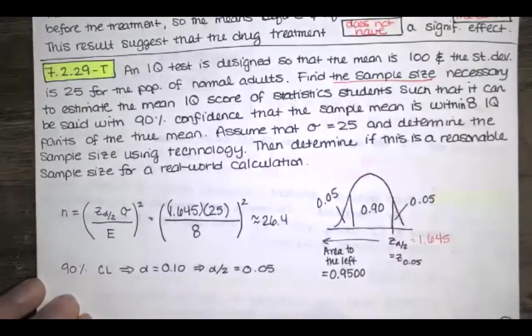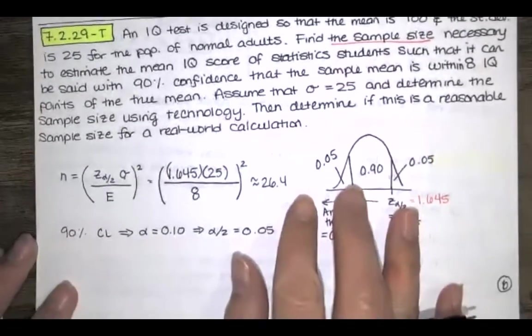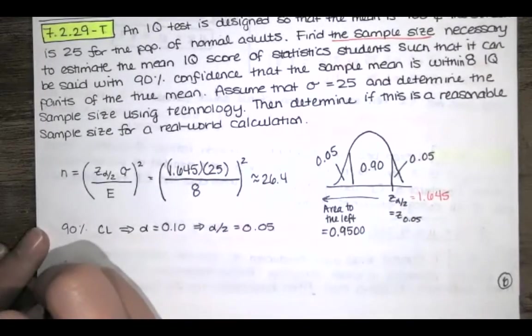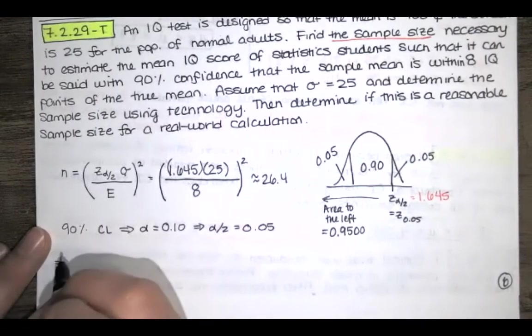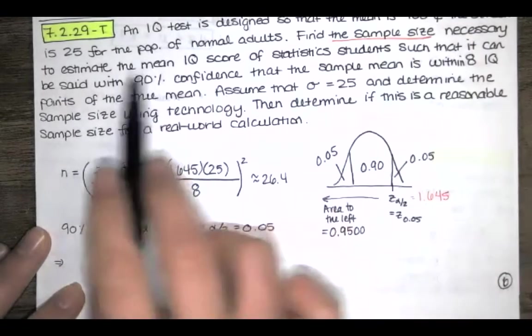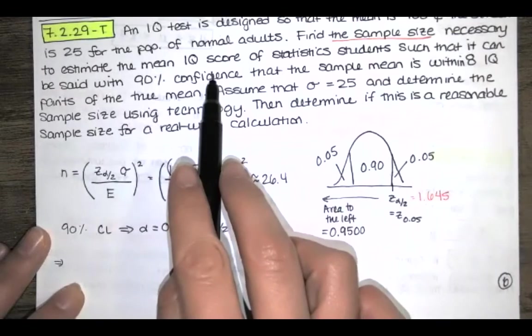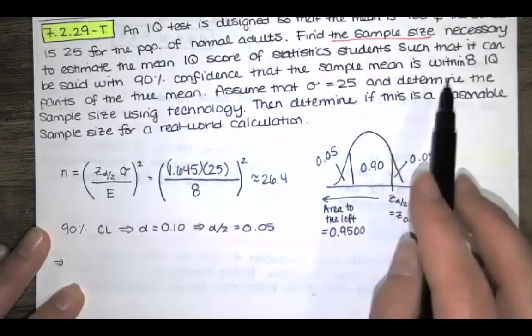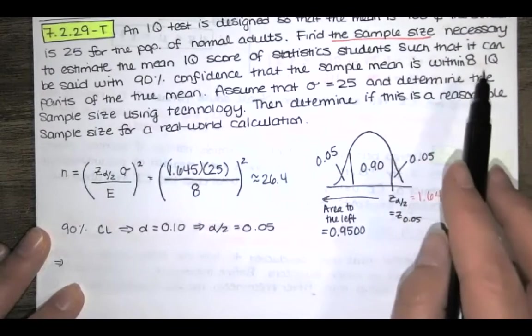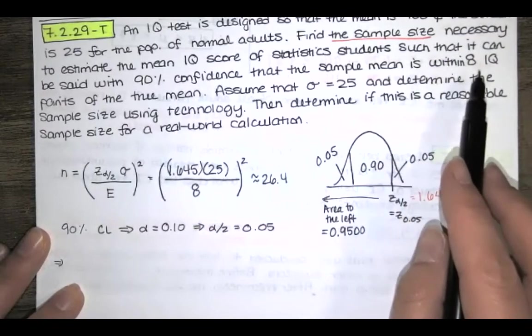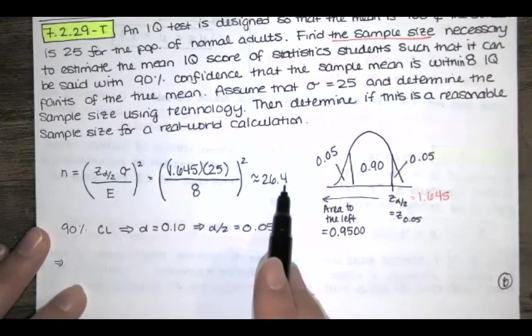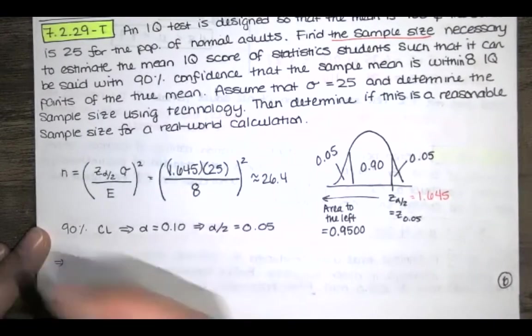We always round up. So the answer is, it says find the sample size necessary to estimate that mean with 90% confidence such that the error is no more than eight IQ points. Well, according to our formula, it's this, but rounded up.